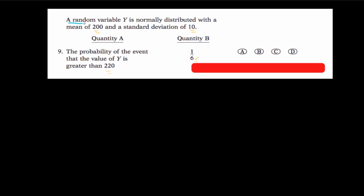The first information given is that the random variable Y is normally distributed. Since it's normally distributed, if I draw it, it should be bell-shaped — a standard normal distribution with a bell-shaped curve. This one is for when the mean is at the origin, but we are told the mean of the random variable is 200 and the standard deviation is 10.